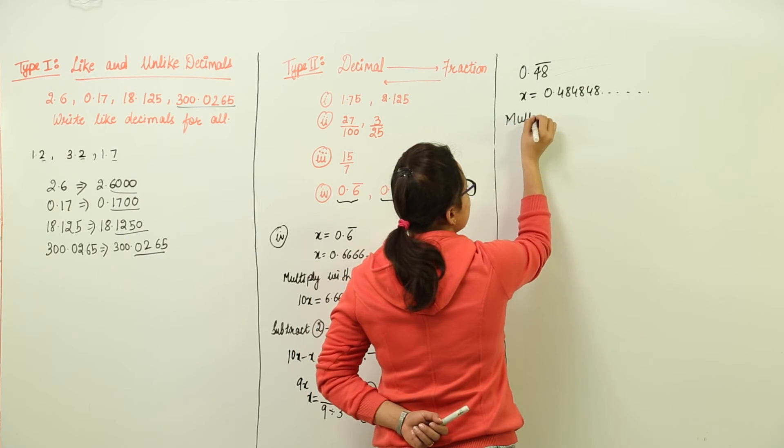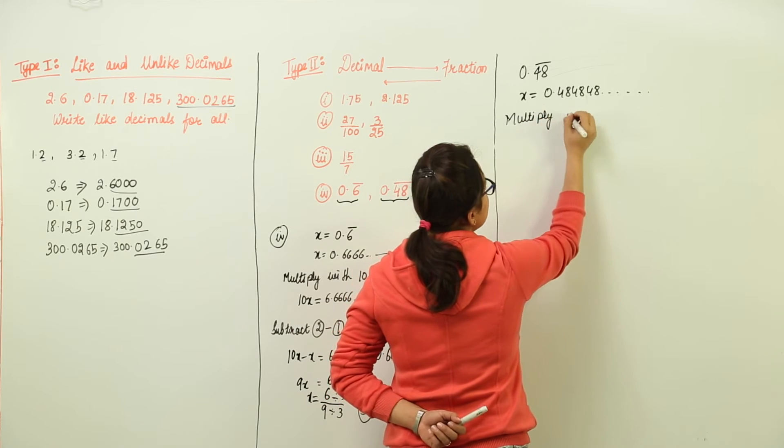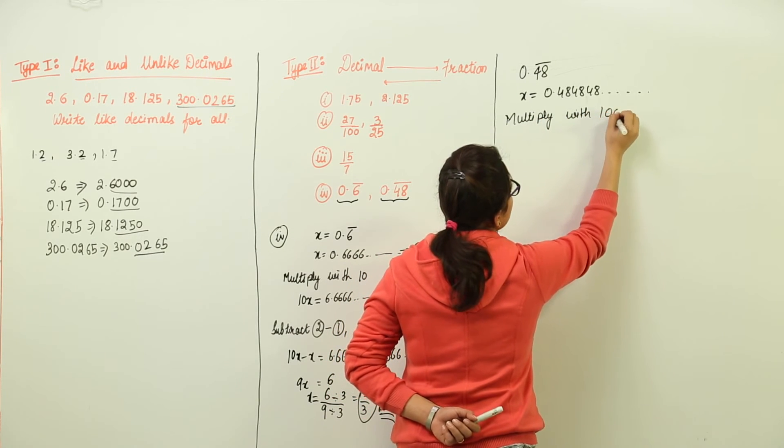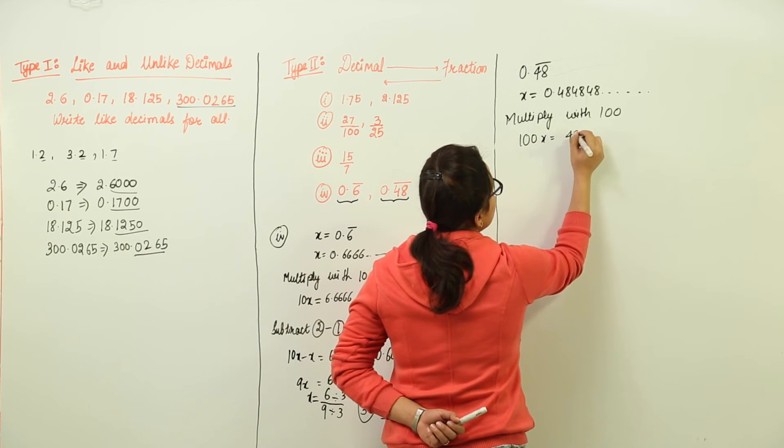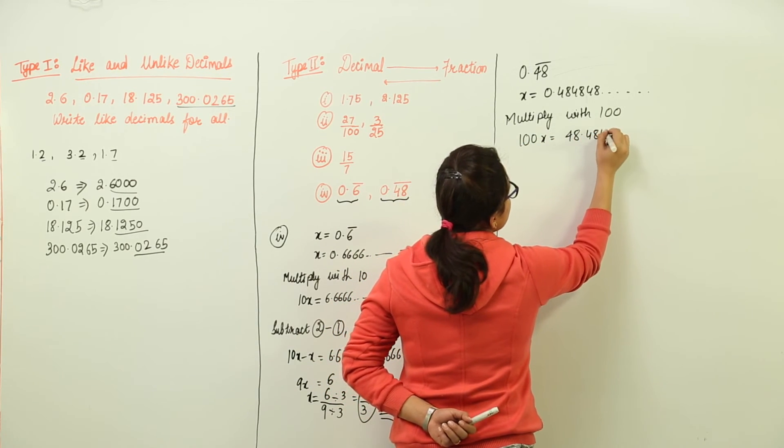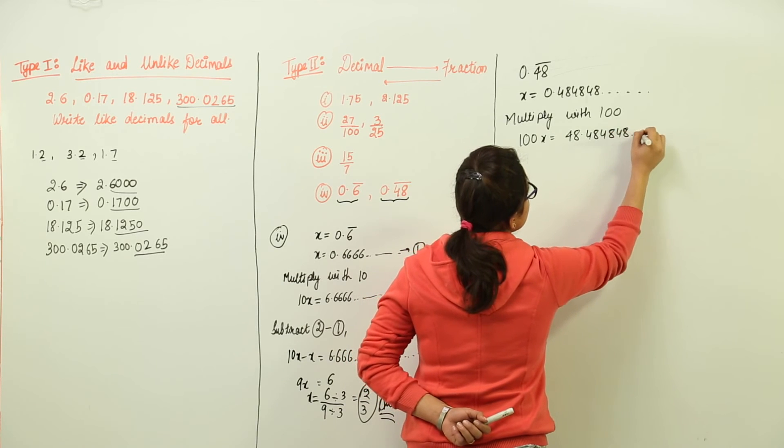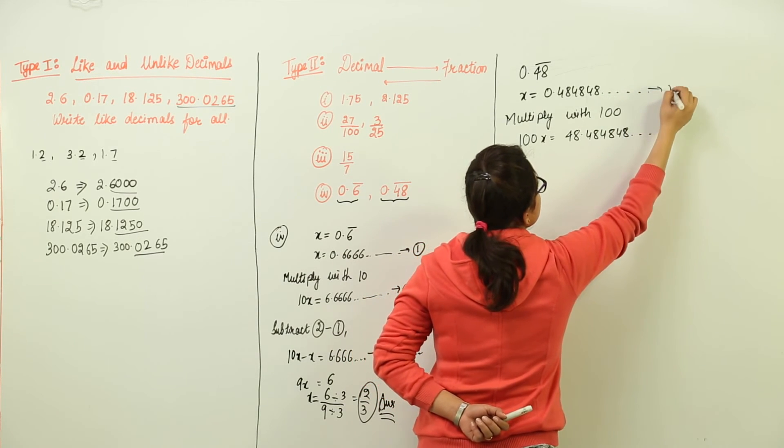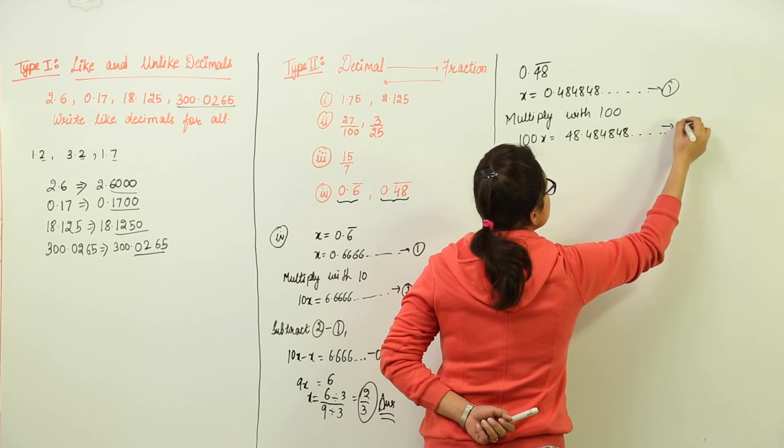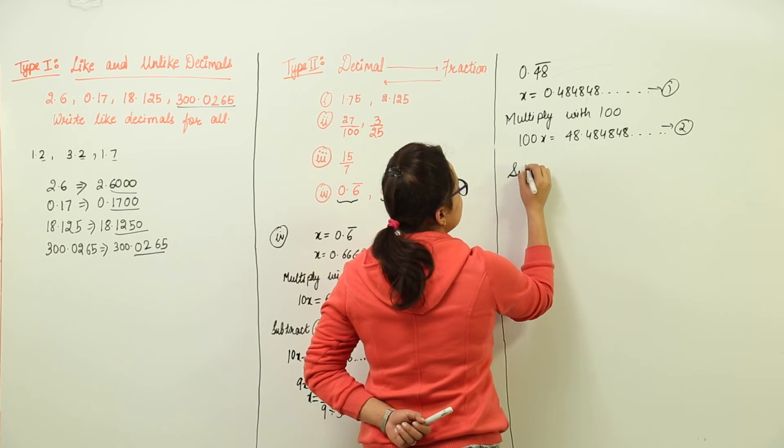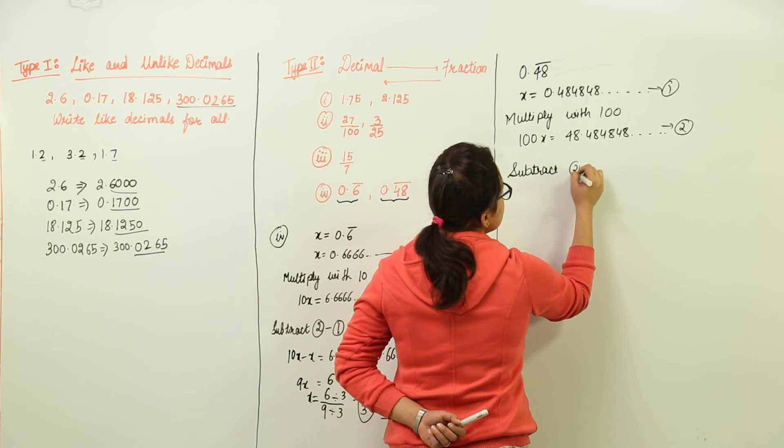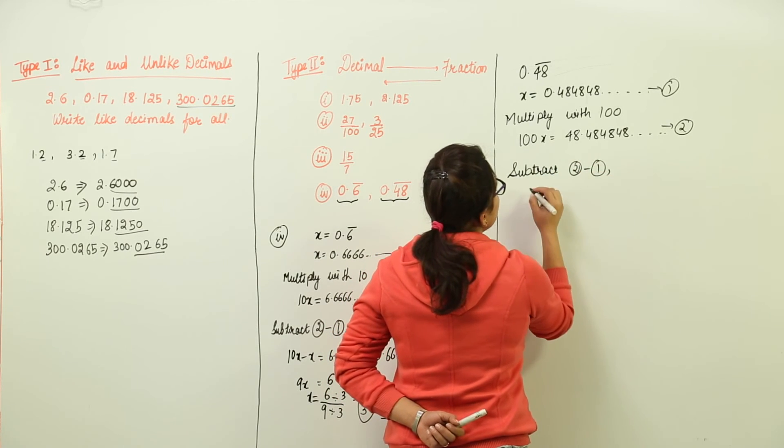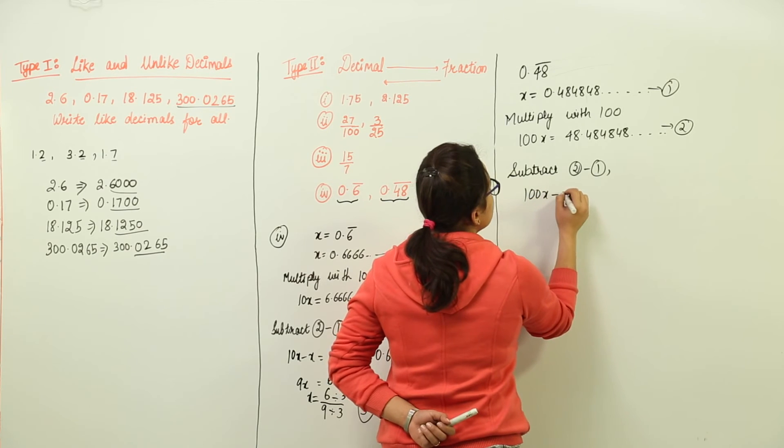x is equal to 0.484848 going on. Now because two digits are repeating, we will multiply both sides with 100. So multiply with 100 and we get 100x equal to 48.484848 and so on. So this is the first equation that we had and this has become our second equation. On subtracting both, that is subtracting the first equation from the second one,